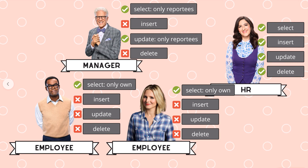Janet as HR can do all the things — select, insert, update, and delete. Michael as manager can select and update only his reportees' data, and can't insert or delete. Chidi and Eleanor can only select their own data and can't do much else.